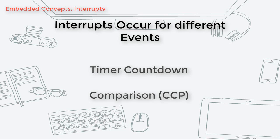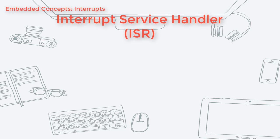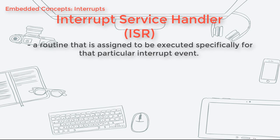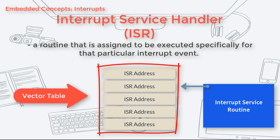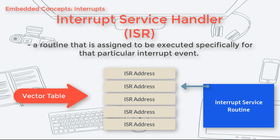Your limit as to what modules you can use and the types of interrupts is your MCU. Whenever an interrupt occurs, the MCU completes the execution of the current instruction and then starts the execution of an Interrupt Service Routine, or ISR, also called an Interrupt Handler. An ISR is a routine that is assigned to be executed specifically for that particular interrupt event. A pointer to its address is assigned to the Interrupt Vector table, which holds every single ISR for all the interrupts, so that when an interrupt occurs, depending on the type of interrupt, it will automatically jump to the specific member of the Interrupt Vector table, and then jump to the address of the ISR.